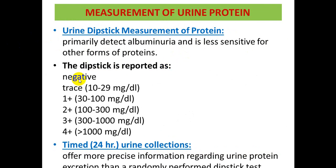The dipstick is reported as negative, trace, 1+, 2+, 3+, and 4+, where 4+ is more than 1000 mg per deciliter. The second method is the timed 24-hour urine collection, which is more precise than dipstick but more costly and time-consuming.